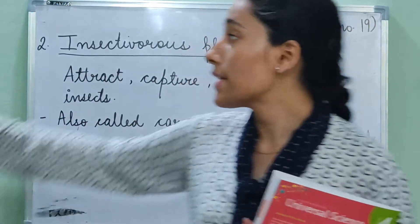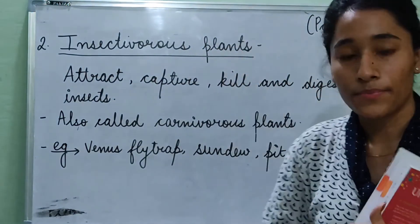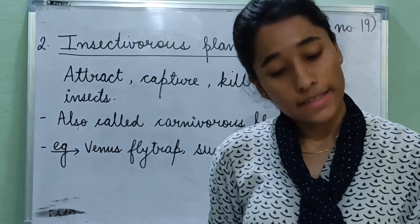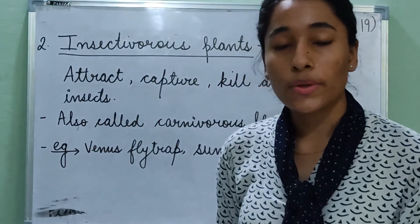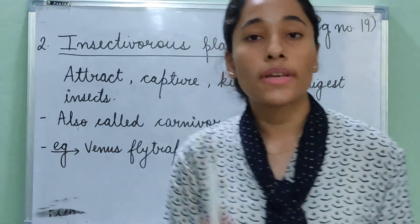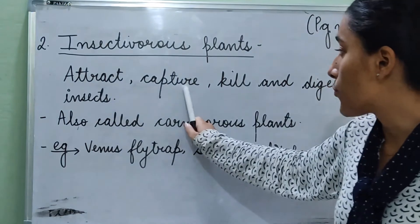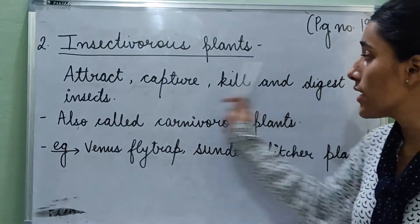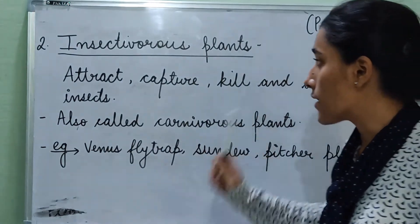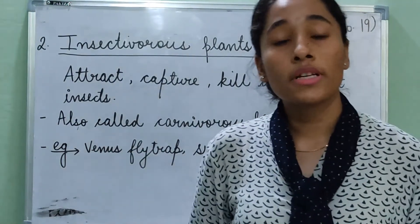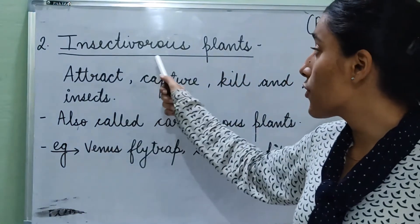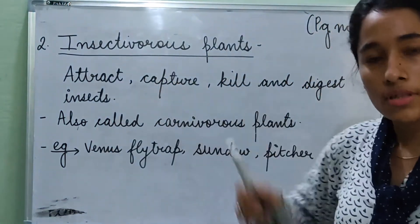Now we are going to learn about insectivorous plants. Some plants attract, capture, kill, and digest insects. Such plants are known as insectivorous plants or carnivorous plants. Because they feed only on insects and not on anything like plants, they are called insectivorous or carnivorous plants.